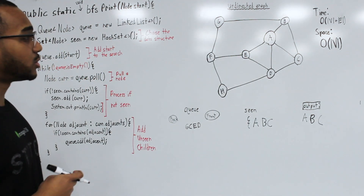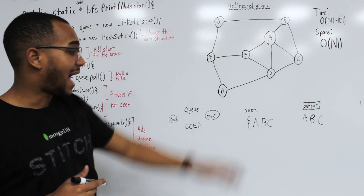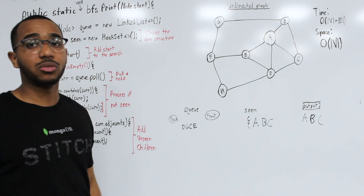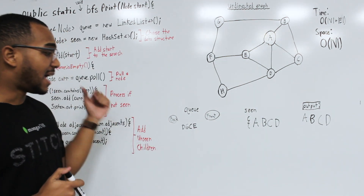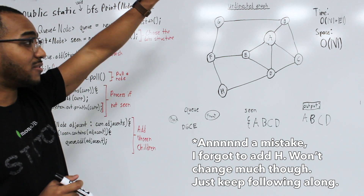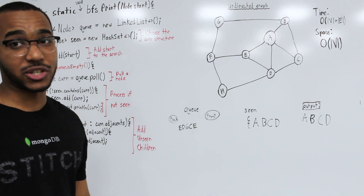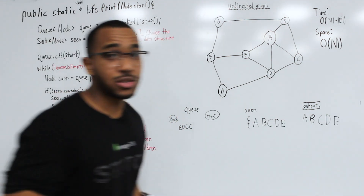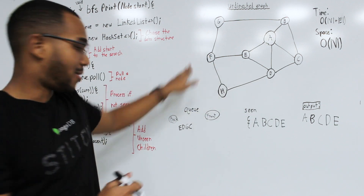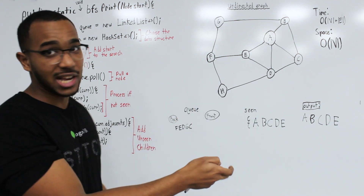We pull D from the front of the queue, process and output it. D's children: A and C have been seen, so we add E. We pull E — not seen, process it. E's children: A and D have been seen, F has not, so we add F. We pull the next item — C has already been processed, nothing happens. We pull G — not yet processed, so we process it and add its children. B has been seen; F has not been processed yet so we note it. We then pull D again — already seen and processed, nothing happens.